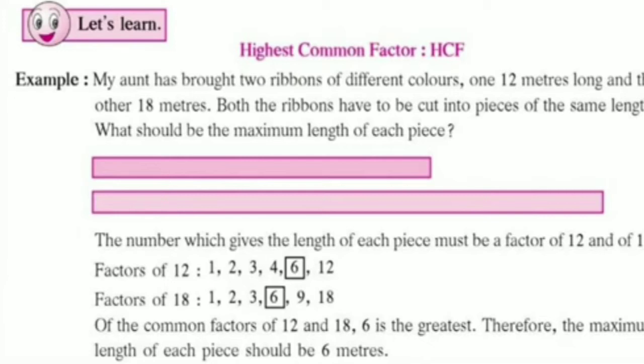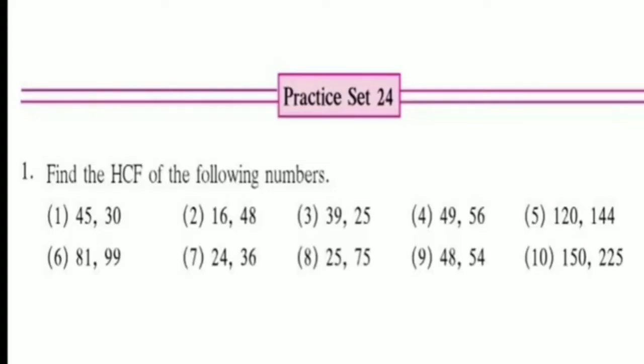Now, we have to find the highest common factor. So, which number is the highest common factor? Yes, correct. 6. 6 number is common of that both number. And it is the highest factor of both number. Of the common factors of 12 and 18, 6 is the greatest. Therefore, the maximum length of each piece should be 6 meters. I hope all are understood.